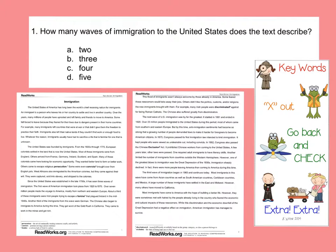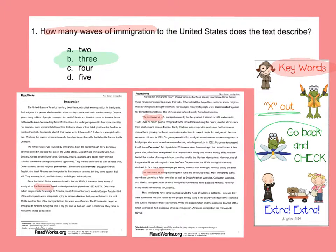Let's practice with our first question — everybody got this one right. It says: how many waves of immigration does the text describe? 'Waves' and 'immigration' are key words. When we hunt back in the text, we can find a first wave, a next wave, and a third wave. We can clearly count and identify that three is the correct answer. We went back to the text and checked.